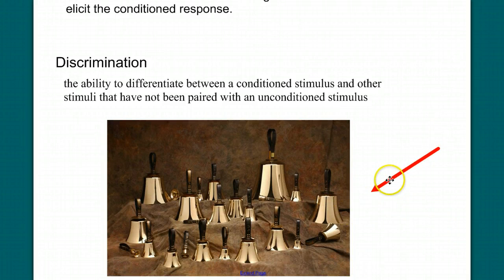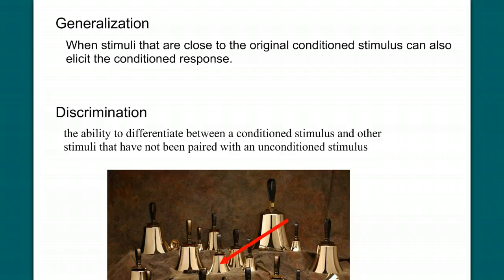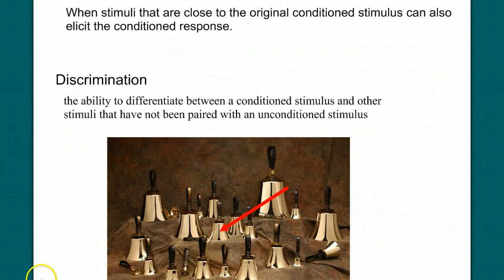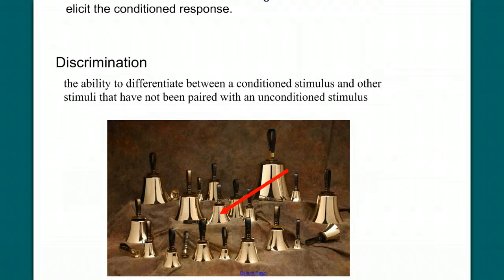But we could also do the opposite thing. We could cause the dog to discriminate or discrimination, the ability to differentiate between a conditioned stimulus and other stimuli that have not been paired with the unconditioned stimulus. In other words, if every time I only, if I rang this bell, I gave food. I would ring these other bells, but never give food after them. Over time, the dog would very clearly learn to distinguish and discriminate that only this bell meant food. Ringing these bells would not elicit salivation. Ringing this one would. It's the opposite idea of generalization. And you can intentionally do either one of these processes. We'll talk about more examples of this in class.